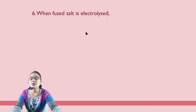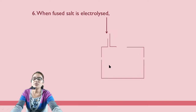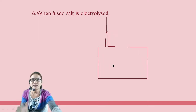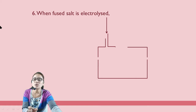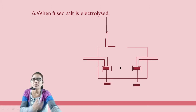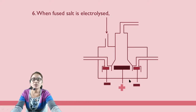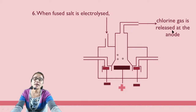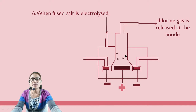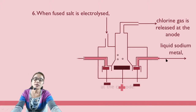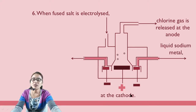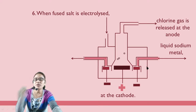When fused salt is electrolyzed, we need a container with a cathode and an anode. Chlorine gas is released at the anode, and liquid sodium metal is collected at the cathode.